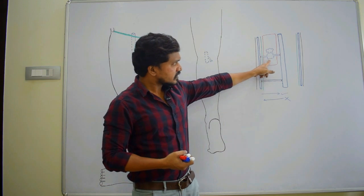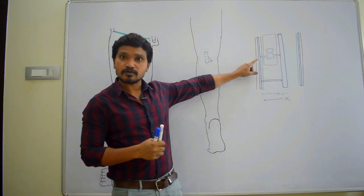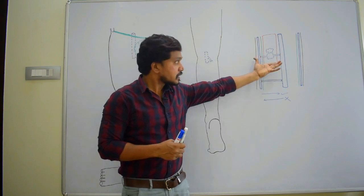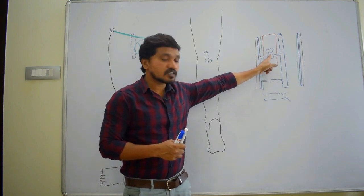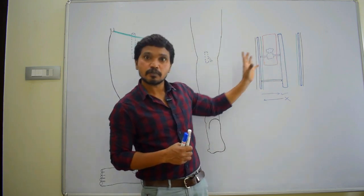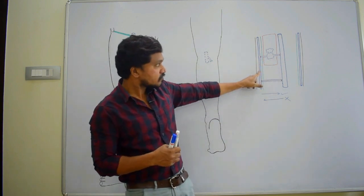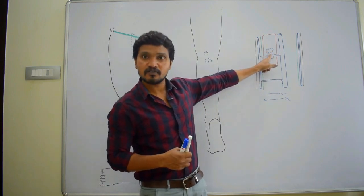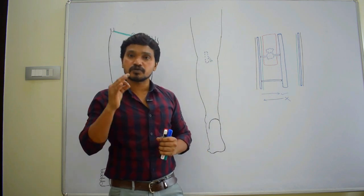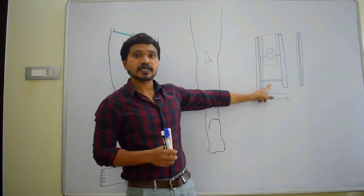In the soleus muscle, venous blood from the superficial veins enters the venous sinuses. When the muscle contracts, blood in the venous sinuses is pumped into the deep veins. When the muscle relaxes, blood from the superficial veins again enters the venous sinuses. It works like our heart — because of this, the soleus muscle is called the peripheral heart of the body. So we have direct perforators and indirect perforators.